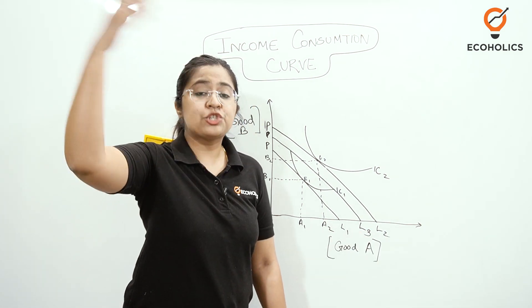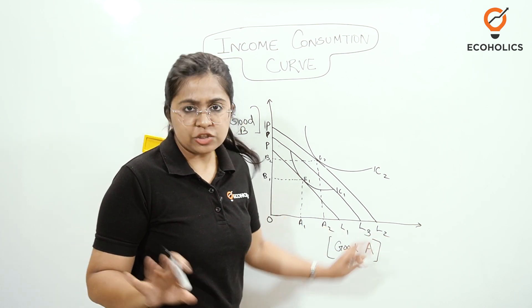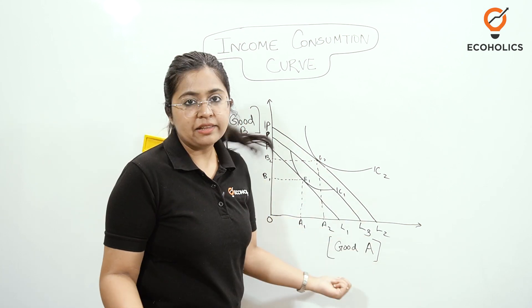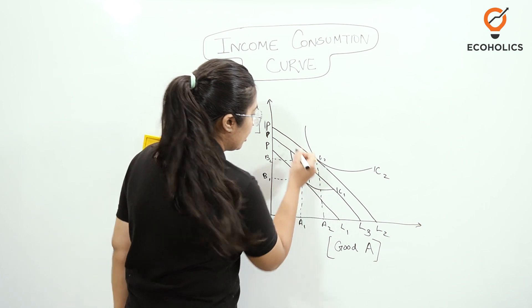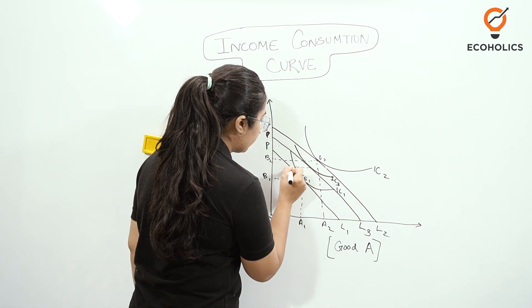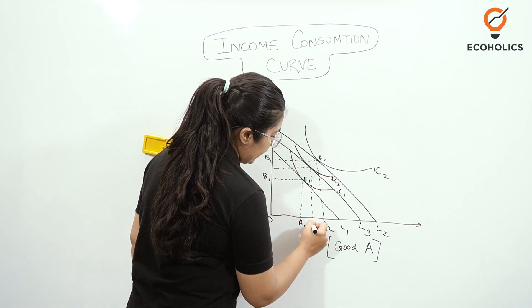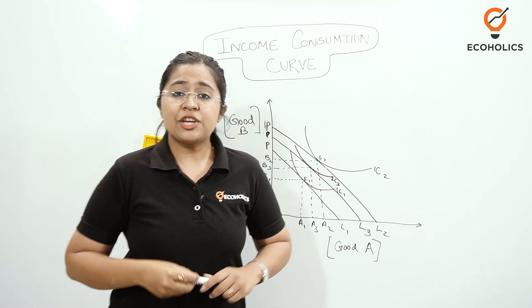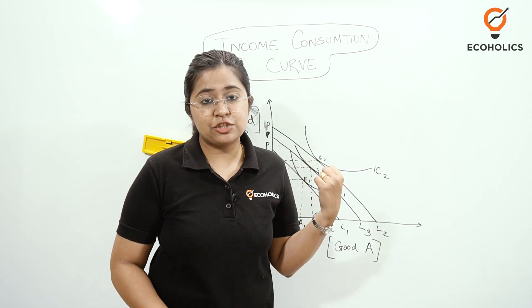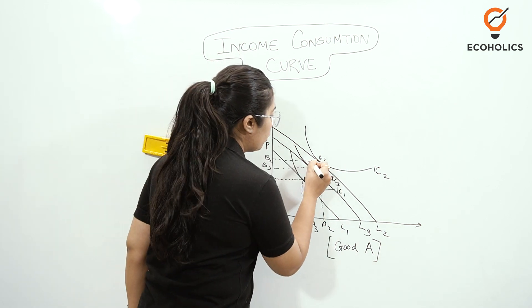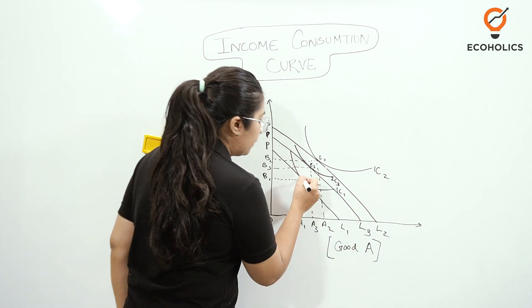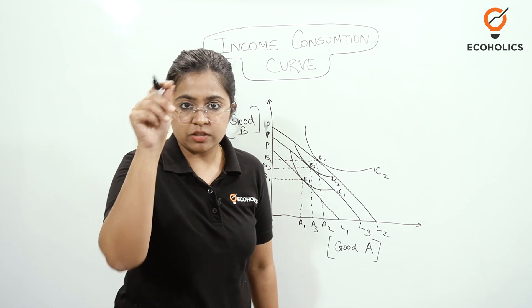On this new price line PL3 the consumer has to purchase commodities within that reduced budget. The new indifference curve is IC3, and the consumer now purchases quantities A3 and B3 at equilibrium point E3. Any change in the consumer's utility caused by a change in income — not by a change in prices — is known as the income effect. We now find the locus of each of these consumer equilibrium points.